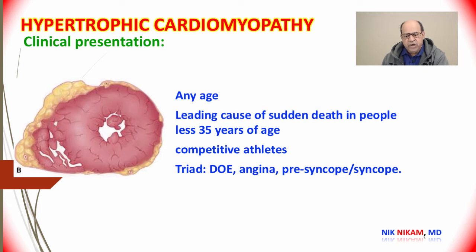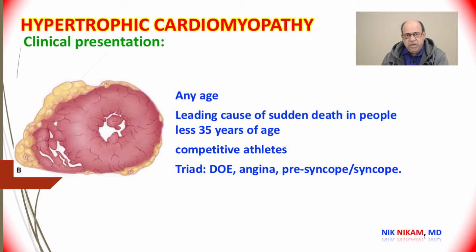Symptoms of hypertrophic cardiomyopathy can present at any age. It is one of the leading causes of sudden death among patients who are 35 years or younger. It can also be seen in patients involved in competitive athletics, and we'll see the difference between an athletic heart compared to a patient with genetic hypertrophic cardiomyopathy.